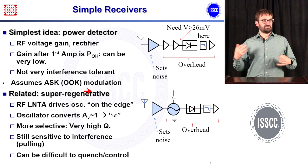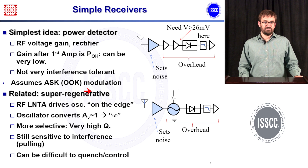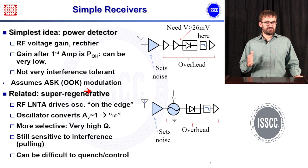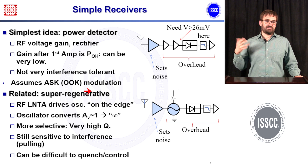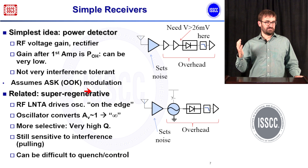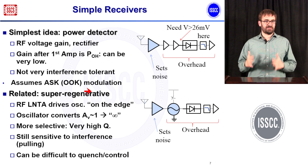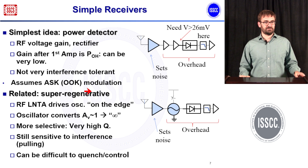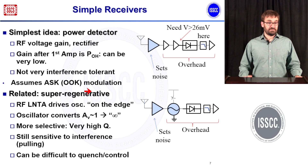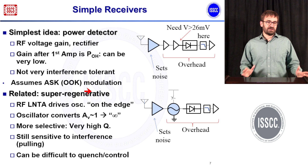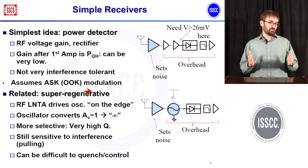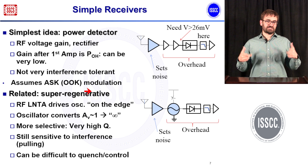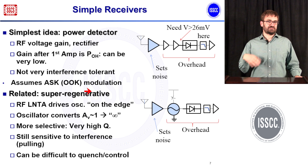A modification to address this is the super regenerative receiver, which replaces much of that gain with an oscillator sitting right on the edge of oscillation, acting as a very good bandpass filter to improve selectivity. It's still quite low power. The main problems are that these oscillators can be pulled by interference and it's relatively tricky to keep the oscillator precisely on that edge, requiring subtle tuning.